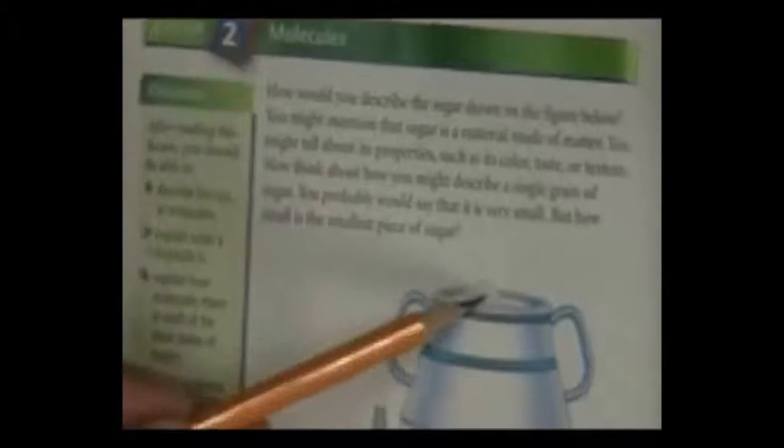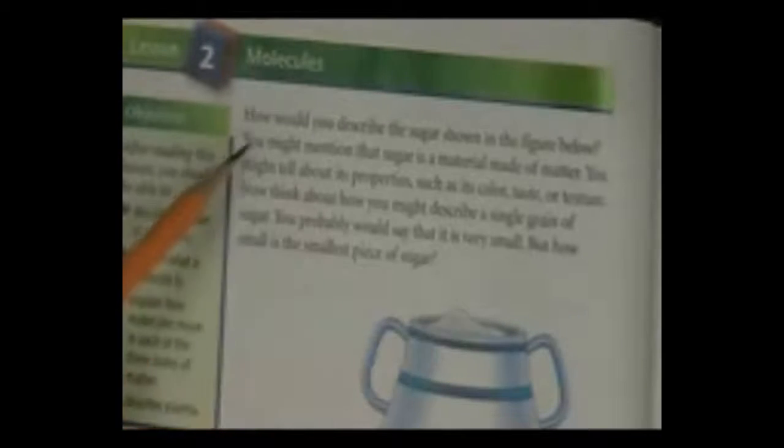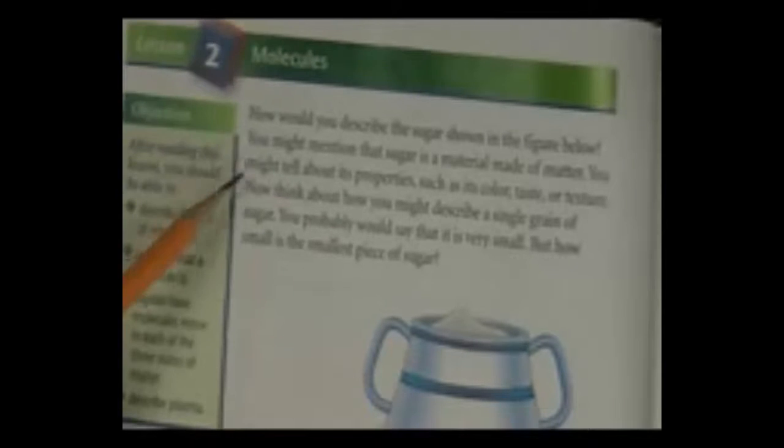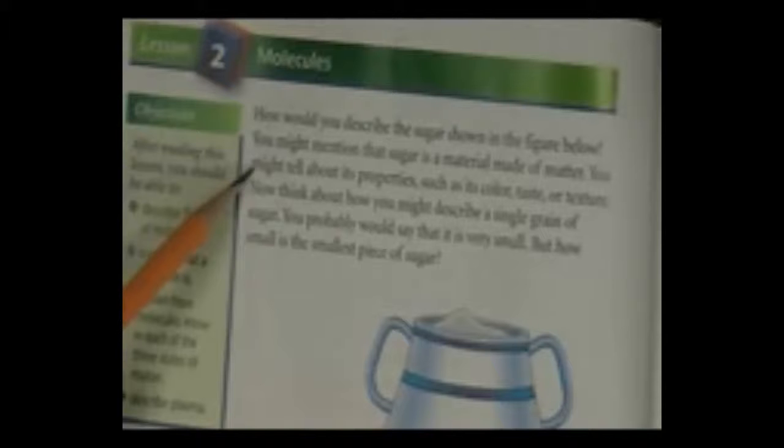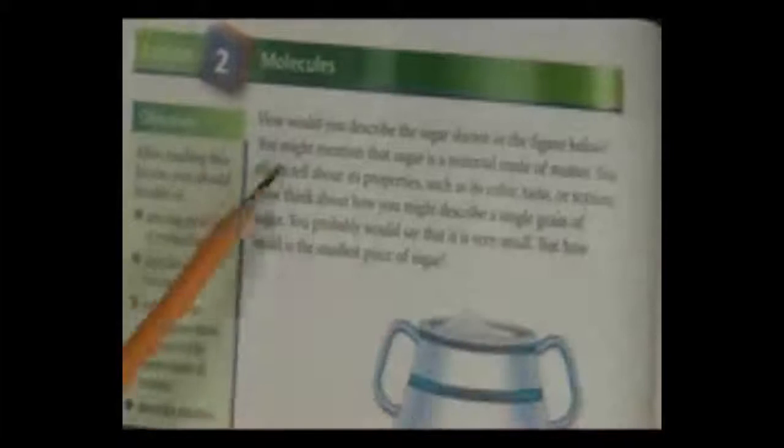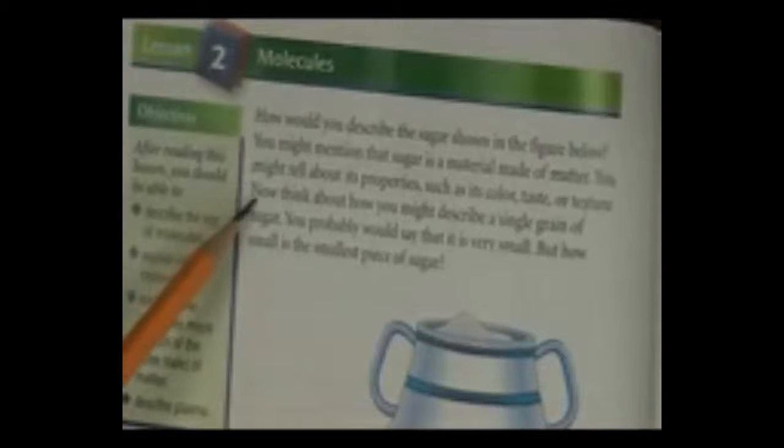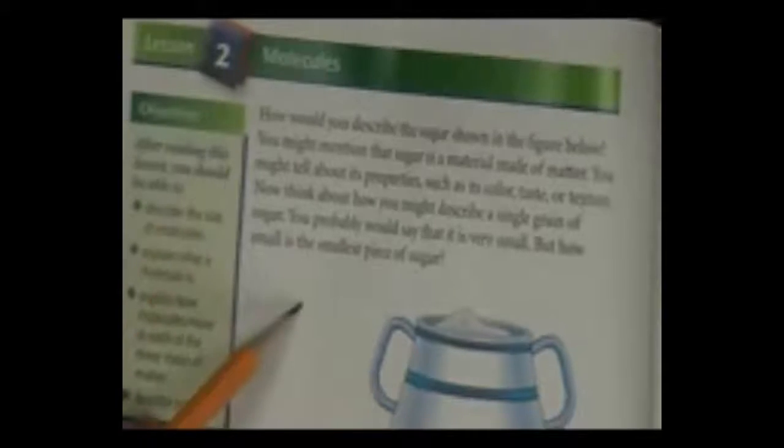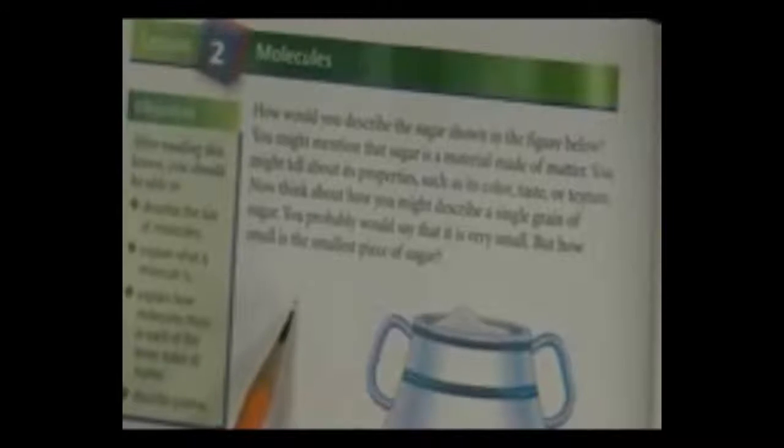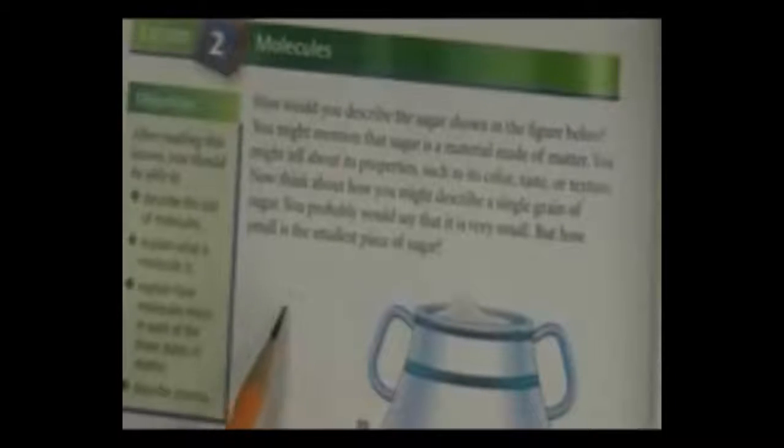How would you describe the sugar shown in the figure below? You might mention that sugar is a material made of matter. You might tell about its properties, such as its color, taste, texture, or feel. Now, think about how you might describe a single grain of sugar. You probably would say that it is very small. But how small is the smallest piece of sugar?